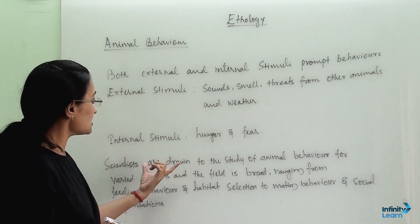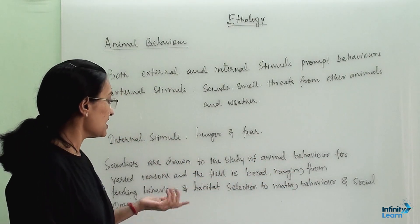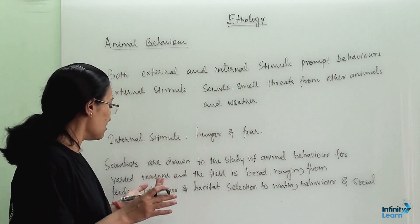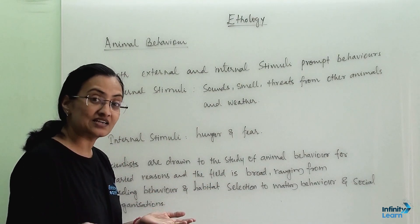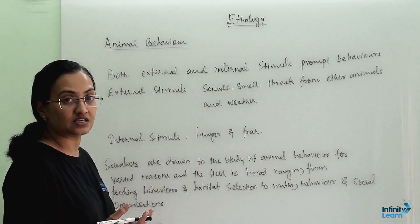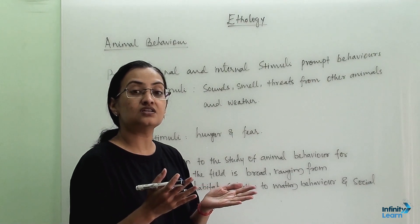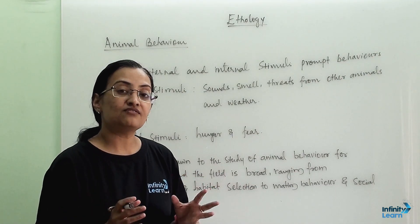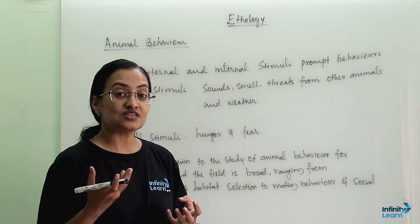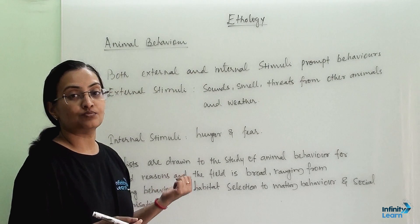Scientists are drawn to the study of animal behavior for varied reasons, and the field is broad, ranging from feeding behavior to habitat selection, mating behavior and social organizations. All these varieties of behavior, when we compile and draw observations and conclusions, is known as animal behavior.